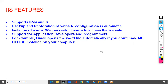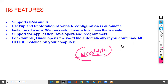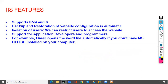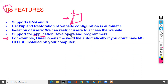For example, if your friend sends you a Word file attached in Gmail and you want to view it, normally you would need to download it and have MS Office installed. If MS Office is not installed, you can't open the file. But with IIS's application developer and programmer feature, you can open the Word file directly in Gmail itself — it's not compulsory to have MS Office installed on your PC.